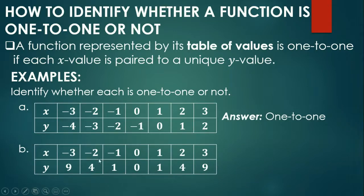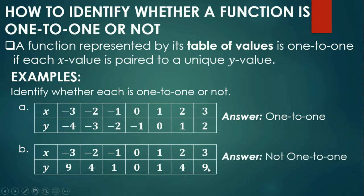Example 2 table of values: x values are negative 3, negative 2, negative 1, 0, 1, 2, 3 — no repeats. But for y: 9, 4, 1, 0, 1, 4, 9 — 1, 4, and 9 are all repeated. Since elements of y are repeated, this is definitely not one-to-one.